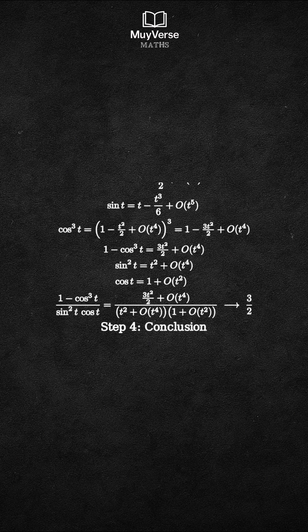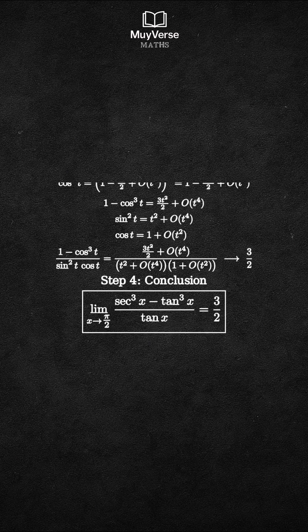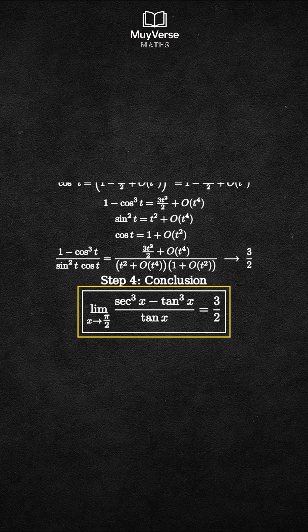Step 4: Conclusion. The limit as x approaches π/2 of (sec³x - tan³x) over tan x equals 3/2.